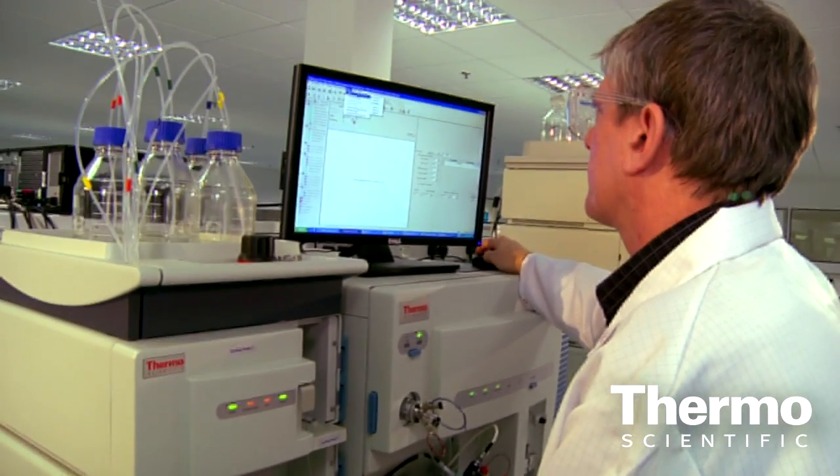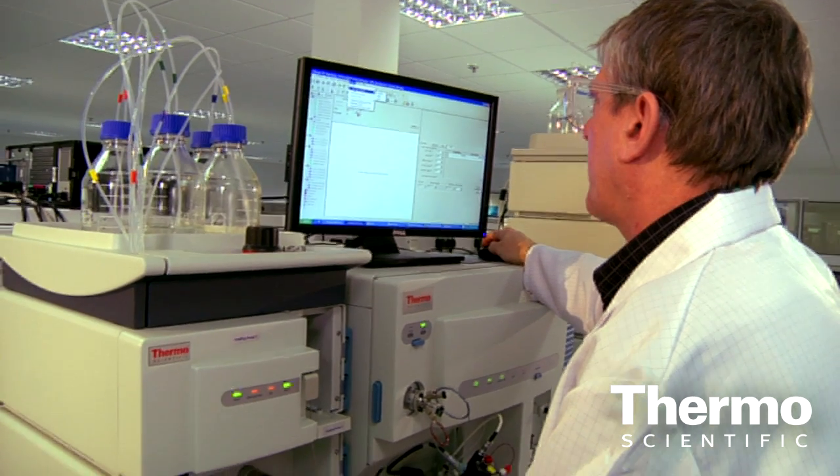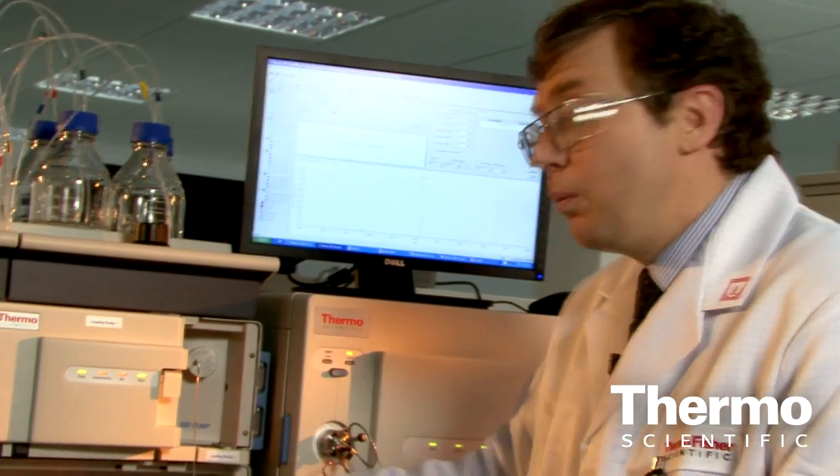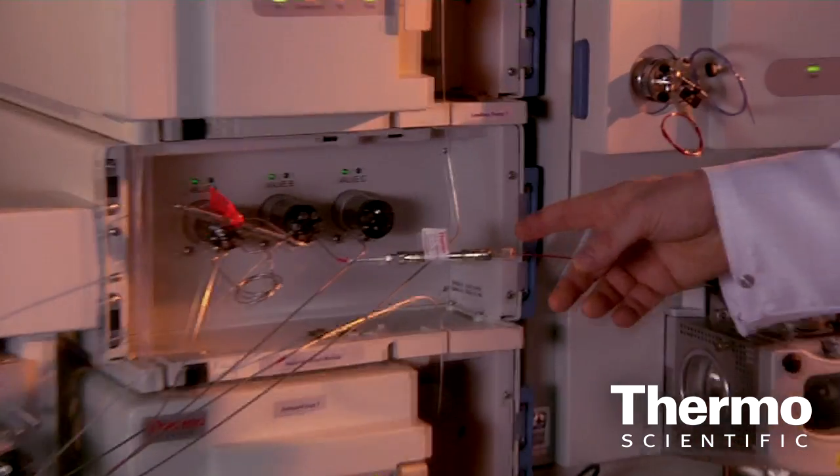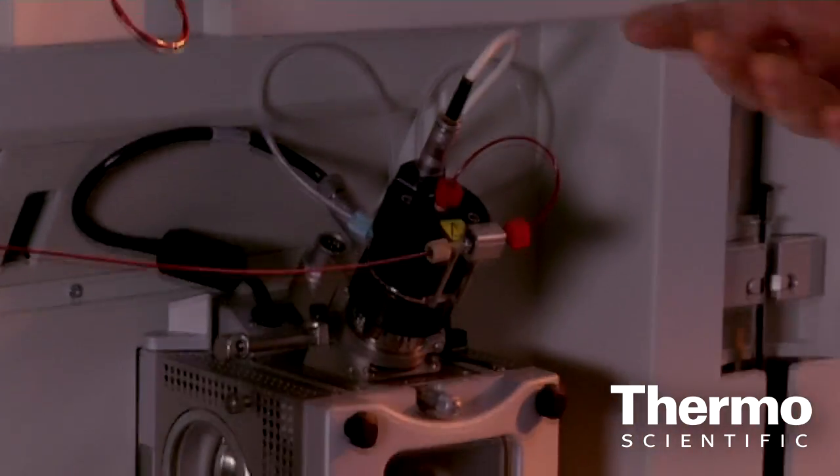And so by separating these components it allows me then to start studying isobaric interference. That is compounds that potentially have the same mass that are co-eluting from my column which I previously wasn't able to do. From here it then goes into the mass spectrometer.